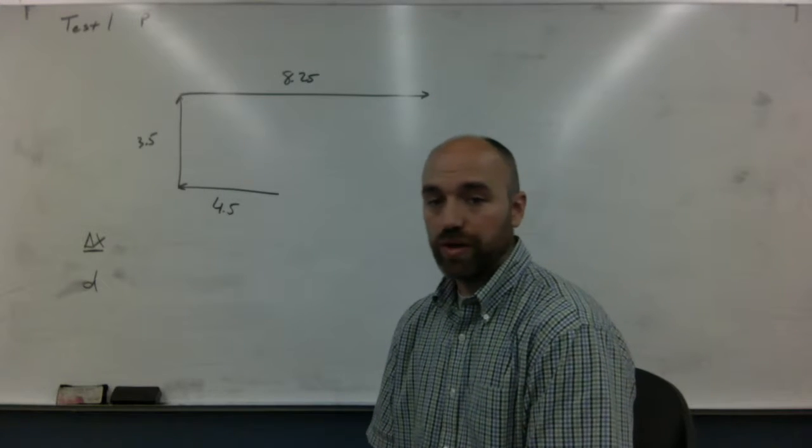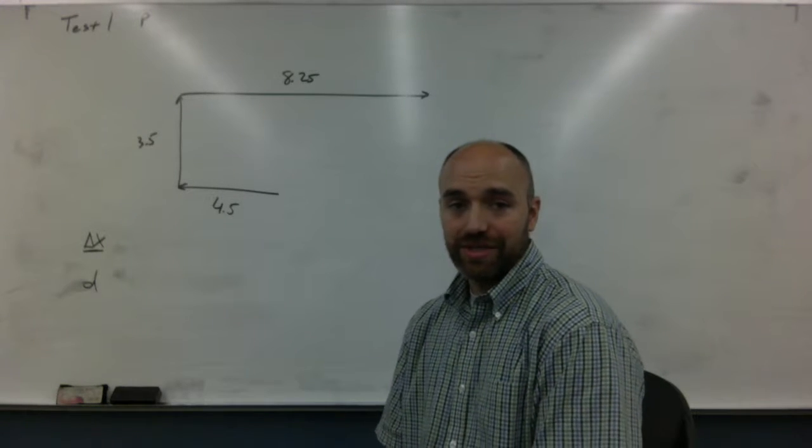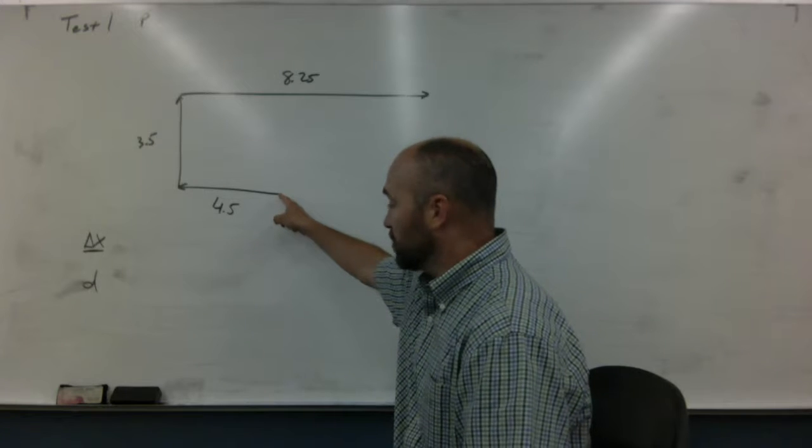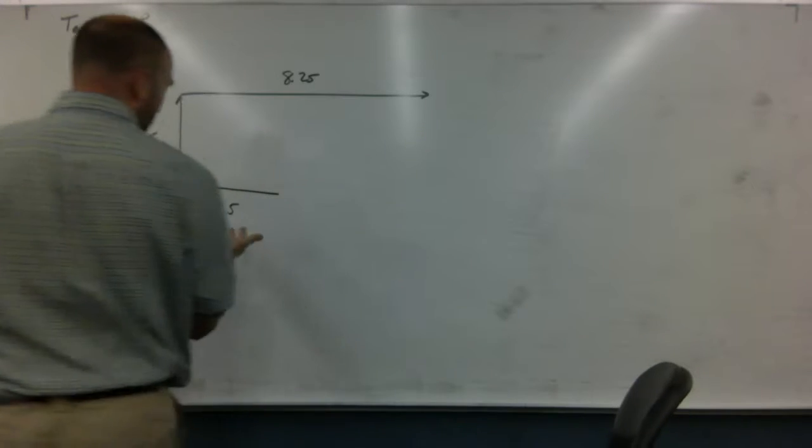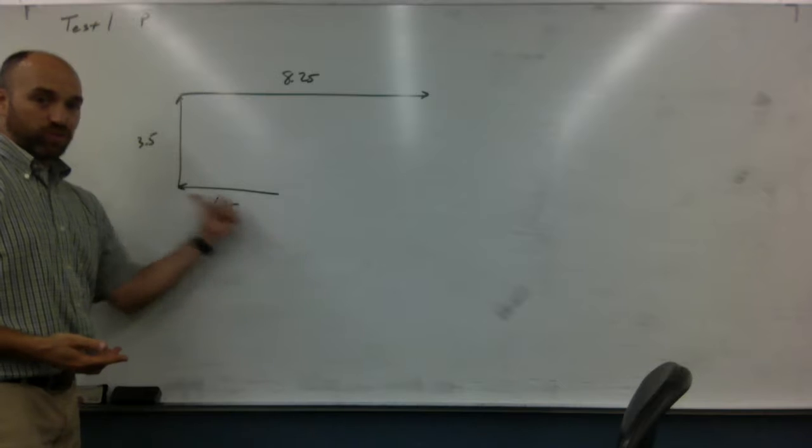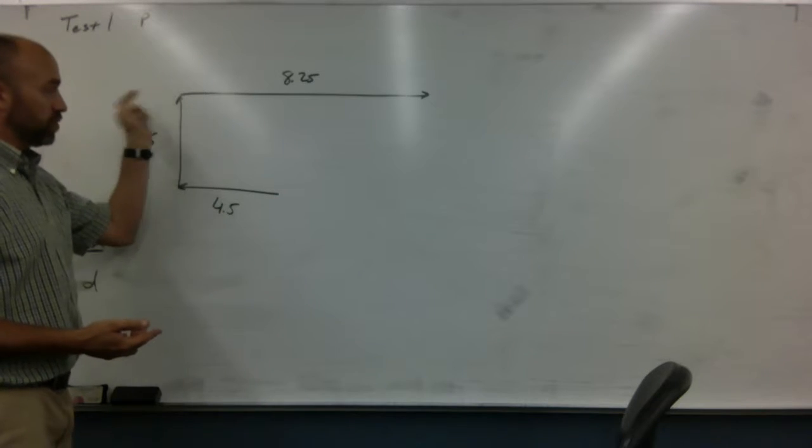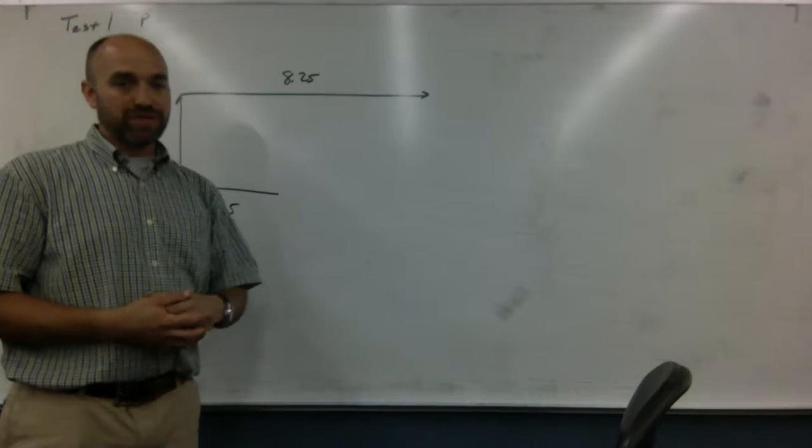This is problem three on test one. The problem says there's a person who walks from here to here. I put the numbers for mine up here: four and a half blocks west, three and a half blocks north, and then eight and a half blocks east.